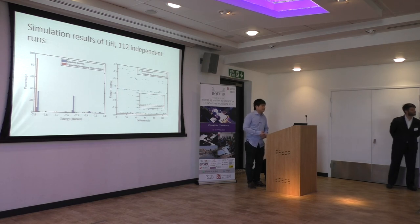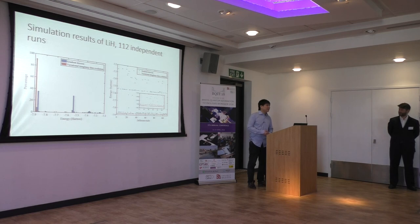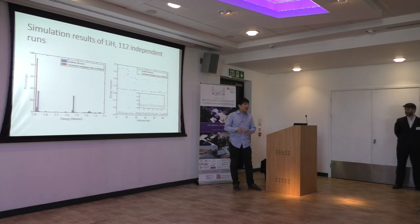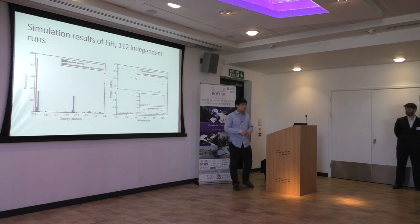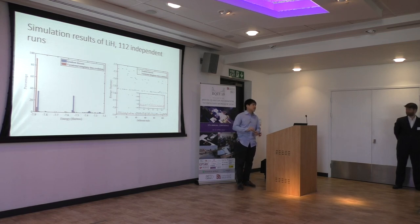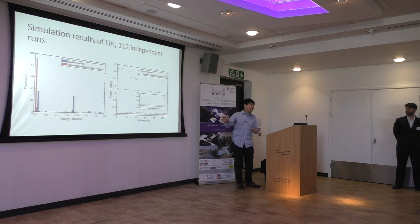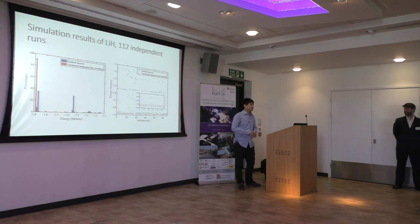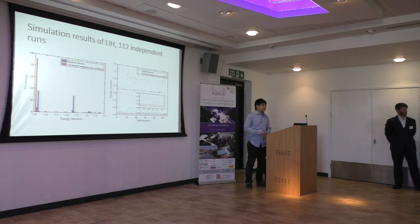Question: You can find the ground state — how do you find excited states? Answer: This is similar to existing methods. One method is to change the Hamiltonian to a function of the original Hamiltonian, for example H minus lambda squared, and by finding the ground state of that modified Hamiltonian you can find excited states. There are also other ideas. Overall our algorithm is kind of independent of that method and applies to general optimization problems.